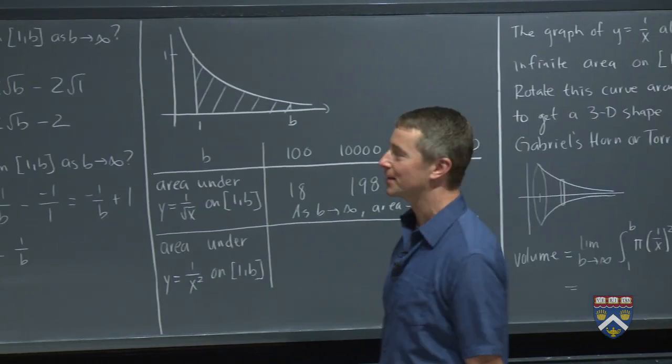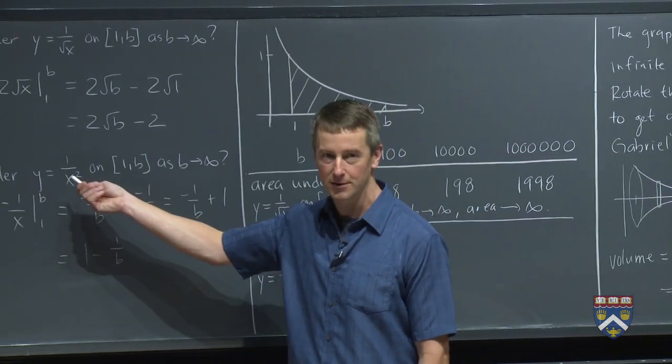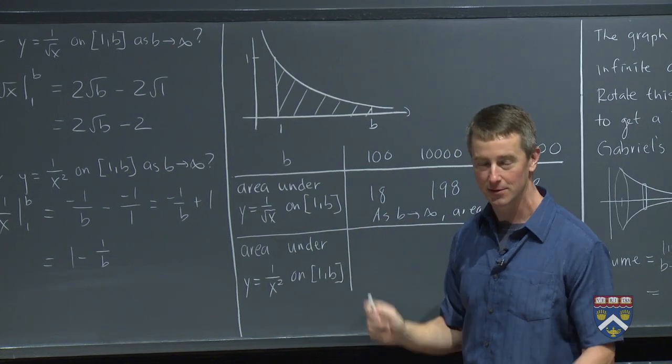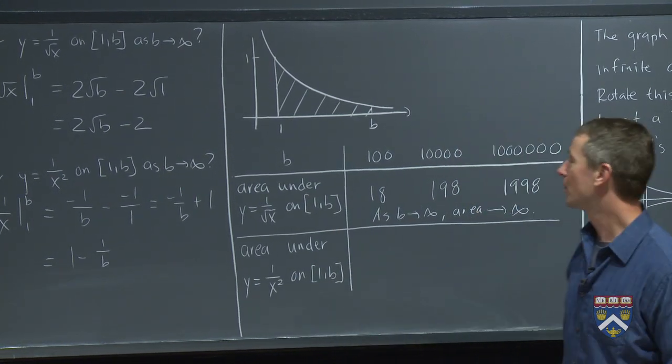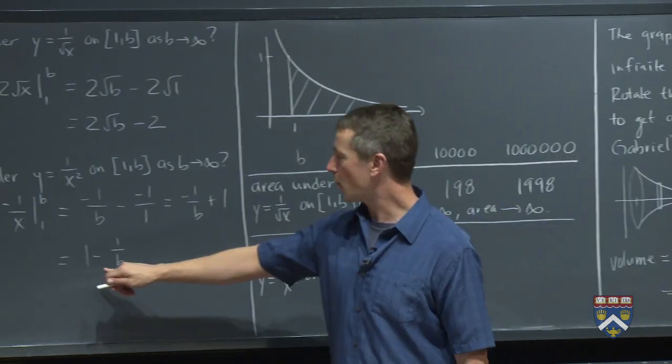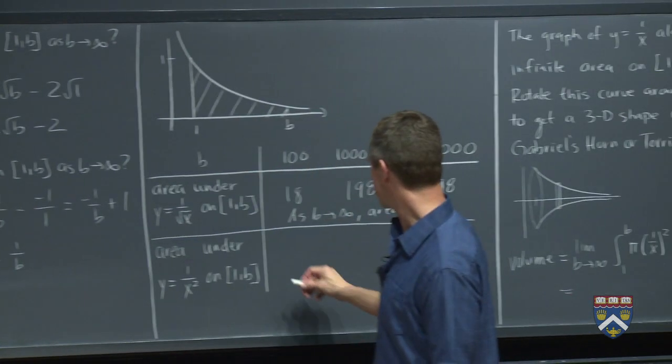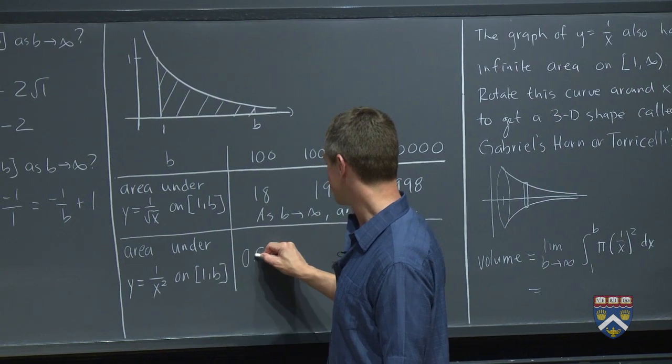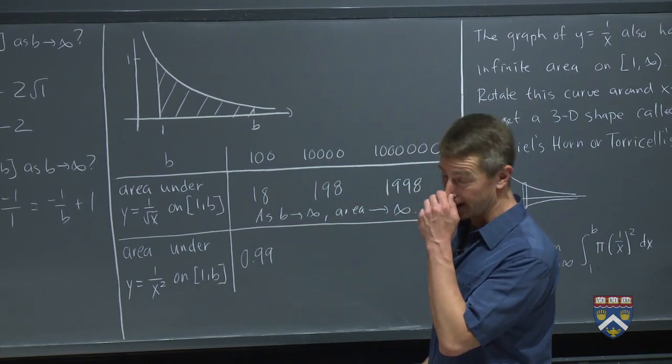But what happened when you did this other function? 1 over x squared qualitatively looks exactly the same as this graph, although it's a little bit lower. What happened when you plugged in there? So when we plug in 100, we get 1 minus 1 over 100, which is 0.99. So we knew it would be less area, and it is.